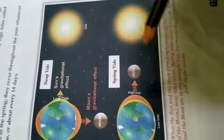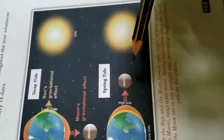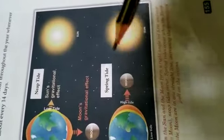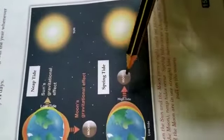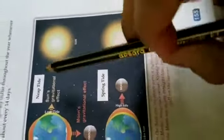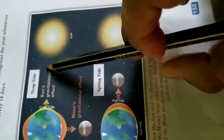Despite their name, spring tides don't just occur in spring. They occur throughout the year whenever the moon is in a new moon or full moon phase, or about every 14 days. Next is neap tide, which occurs exactly halfway between each new and full moon.